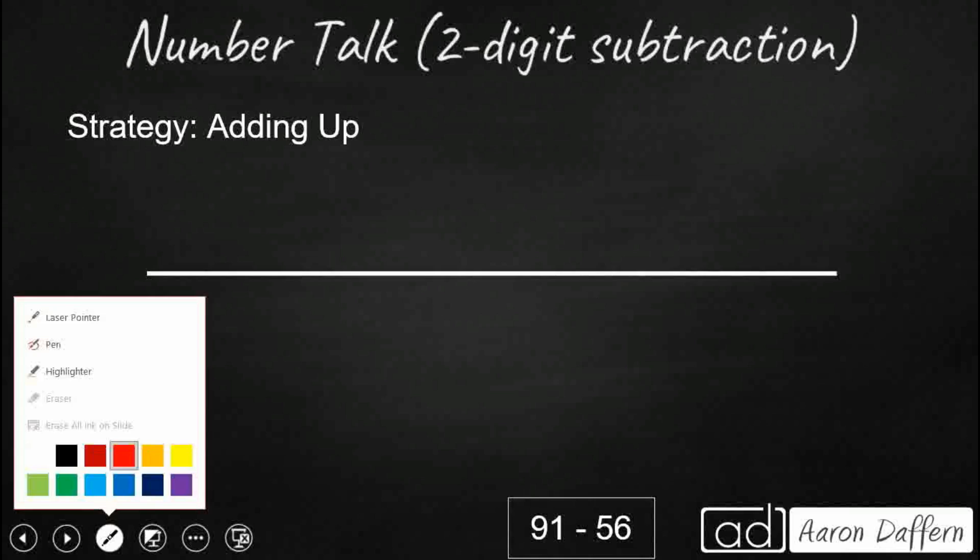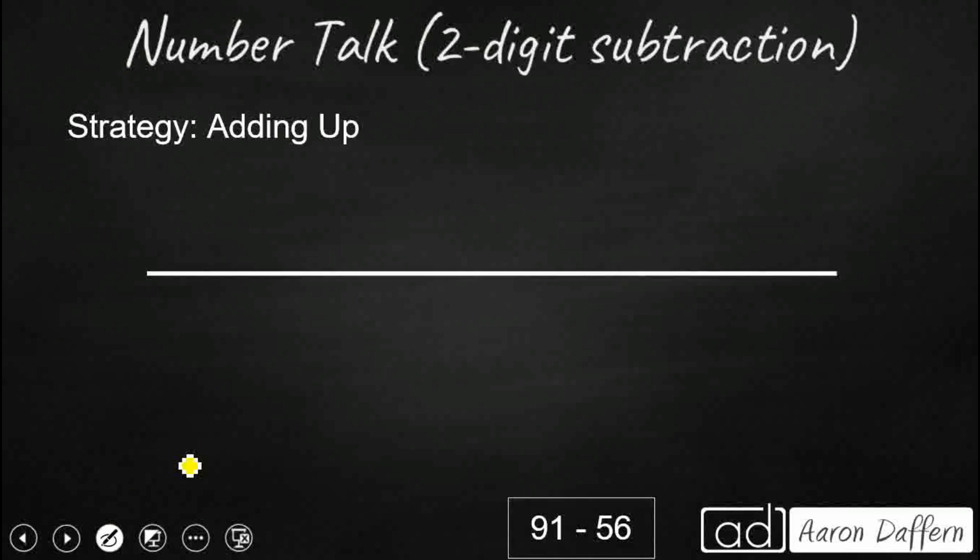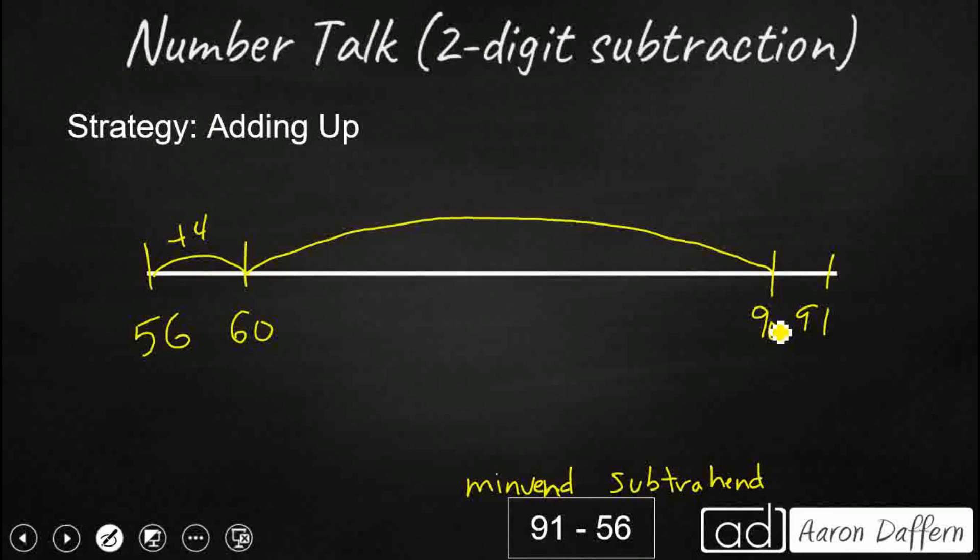So the first thing that we can always do when we are subtracting in our head is to add up. So what we are going to do is we are going to take our smaller number, which is called the subtrahend. And we are going to start there, and we want to just pretend like this is a number line, and we want to add up. And we want to get to our next 10. And our ultimate goal is to get up here to our 91, our larger number, which is called the minuend. So we have special names for the larger number and the smaller number. So we took a jump of 4 to get to the nearest 10. We want to take a big jump to get to the nearest 10 we can to 91 without going over. And that's going to get us to 90. So that's a big jump from 60 to 90.